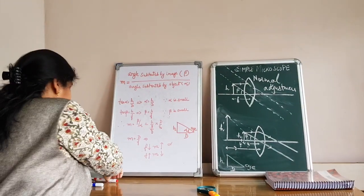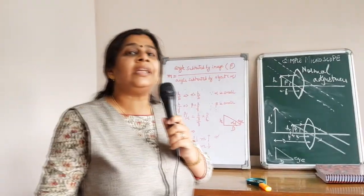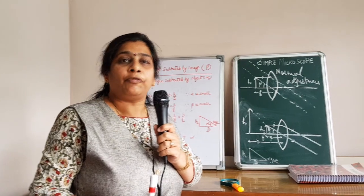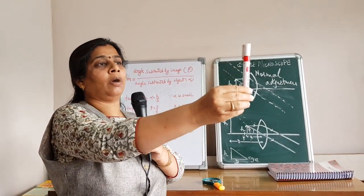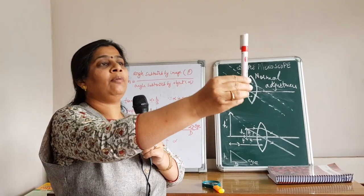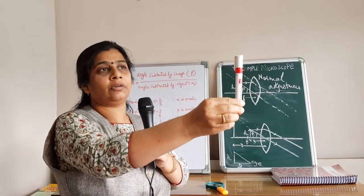Before we actually start with simple microscope, we need to know a few things. Suppose this is an object. I am able to see this object very clearly only when it lies at least distance of distinct vision.